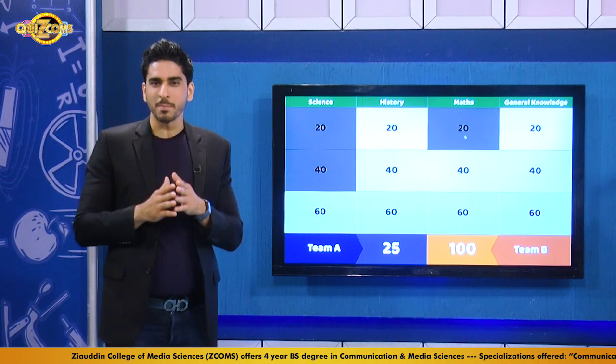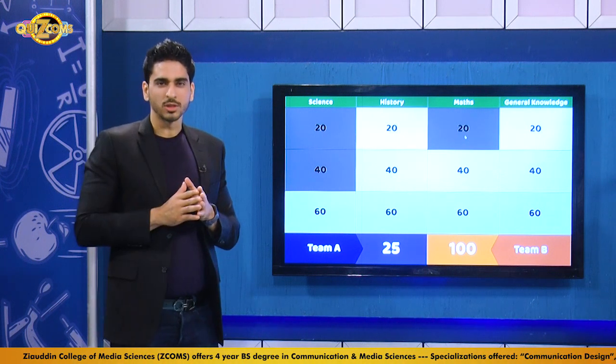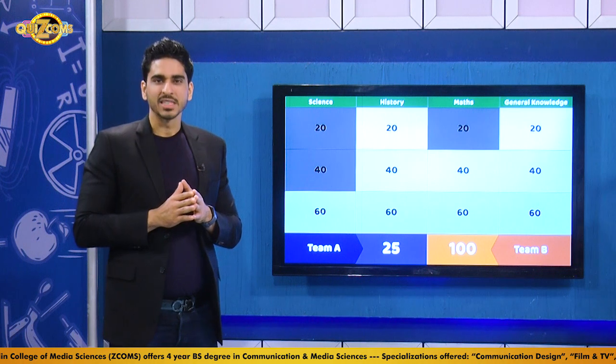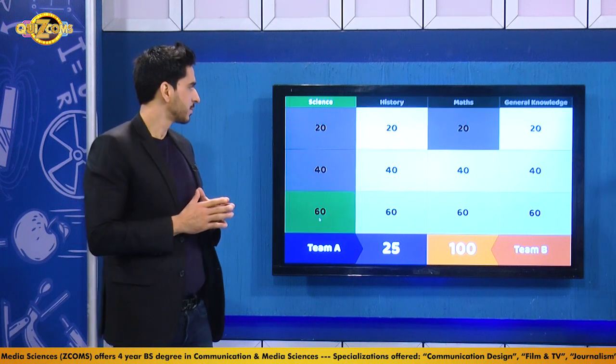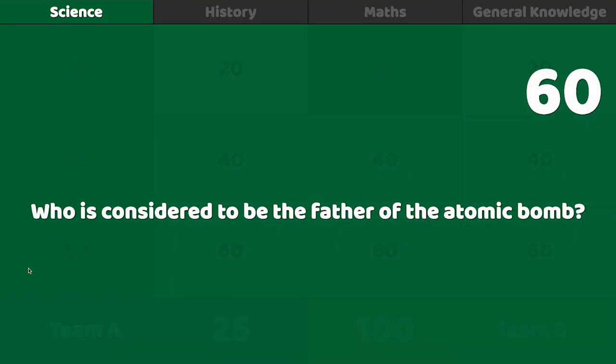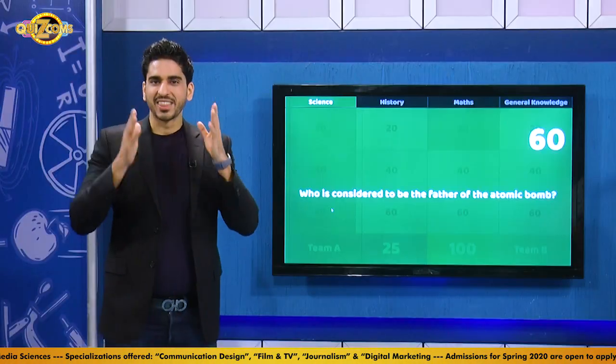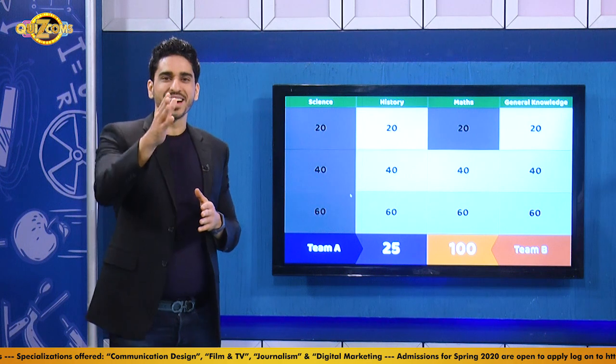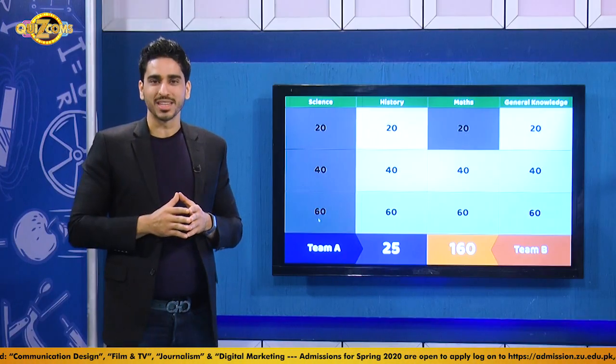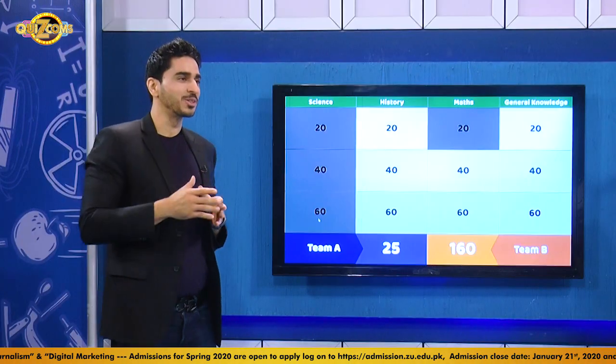Team B makes another choice: science for 60. The host notes Team B is doing the smart thing — they're strong in maths and science and are picking those questions. The question: who is considered to be the father of the atomic bomb? Team B buzzes and answers Robert Oppenheimer. That is absolutely correct! Team B, who started off stressed, is now feeling good and building a huge lead.